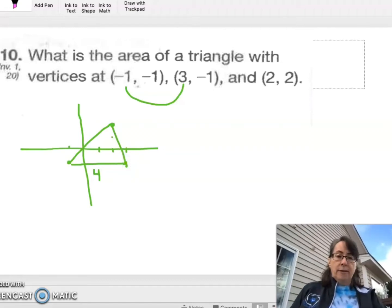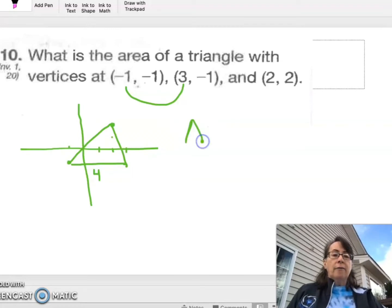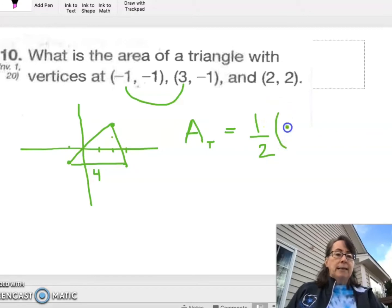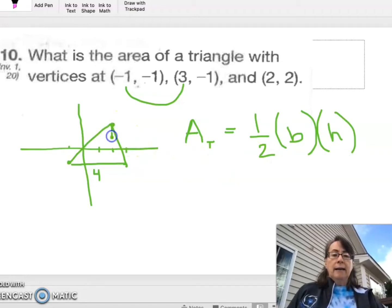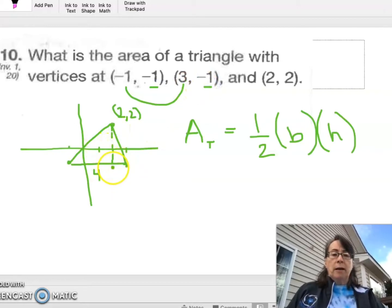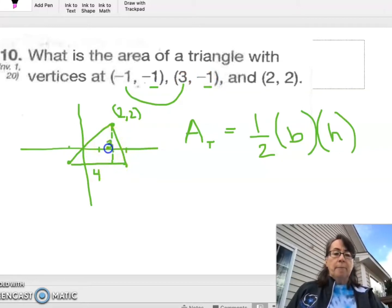To find the area of this triangle, the area of a triangle is 1 half the length of the base times the height. So how high is this triangle? This point here is 2, 2. So it is 2 steps above, but this baseline is 1 step below. So 2 above and 1 below means that the whole height is 3 units.